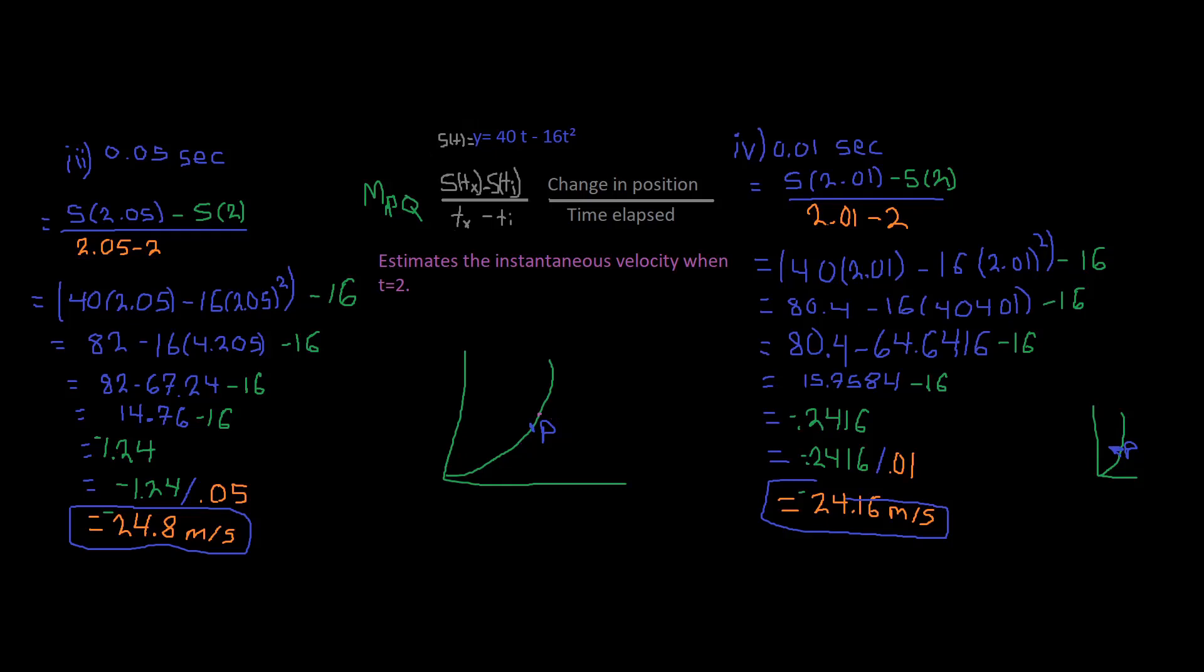When these points q get super close to p, what happens is it converges. That's a term we use in mathematics. It converges, and then it forms the tangent line. And so we want to find the slope of the tangent line. But in order for us to do that, we first need to find these averages of the secant line. So these are our average velocities. And when it gets to p, that becomes our instantaneous velocity.